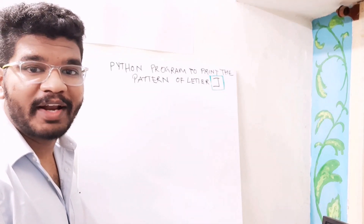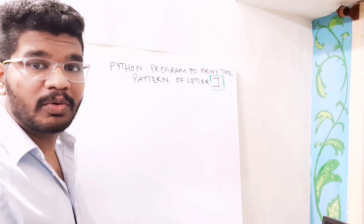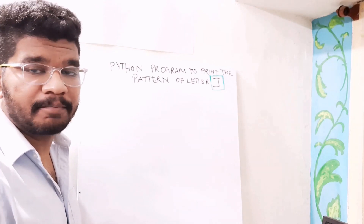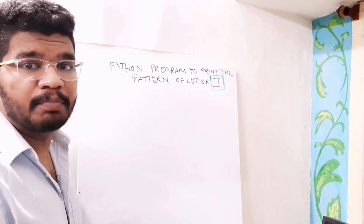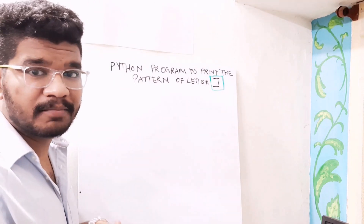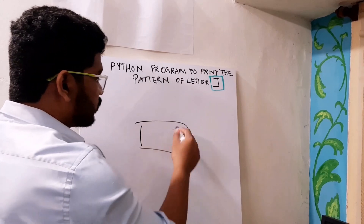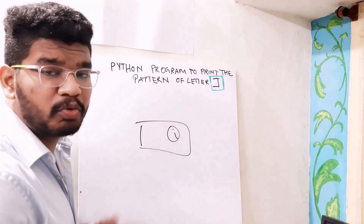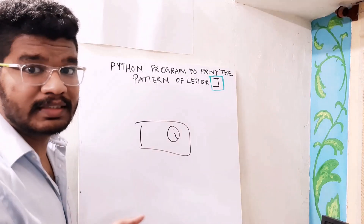Hello everyone, welcome back to programminginpython.com. I am back with another video. Here in this video, I am going to print the pattern of letter J. In the previous videos, I have told you how to print the patterns up to letter I. I have linked the playlist of all the videos in the description below and also in the I button in the right corner of this video. So make sure you click that or follow the videos on the link. Now it is time for the pattern of letter J, so let's get started.